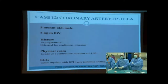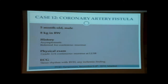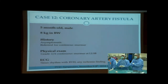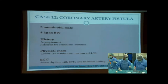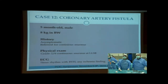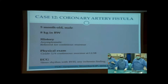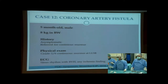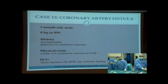This case is a five-month-old male, eight kilograms in body weight. He was asymptomatic, referred for continuous murmur. Physical examination also revealed continuous murmur at the left lower sternal border. ECG showed biventricular hypertrophy with no ischemic findings.